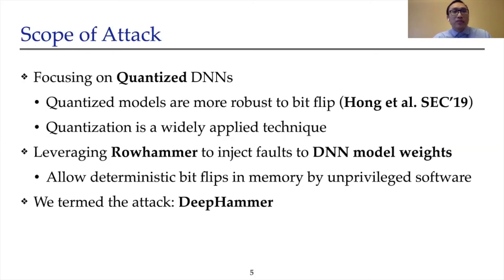Our work focuses on quantized DNN models. In particular, a quantized model is more robust to bit-flips as pointed out by prior work. Since model quantization is widely applied due to its advantage in computing efficiency, investigating the robustness of quantized models against hardware faults is necessary. Our work leverages the Rowhammer technique to inject faults into DNN model weights. Rowhammer allows deterministic bit-flips in memory that can be triggered through privileged software, and is considered one of the most dangerous fault-attack vectors in real systems. We term our proposed attack DeepHammer.